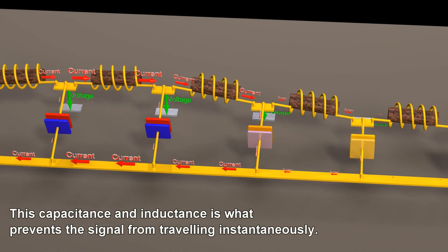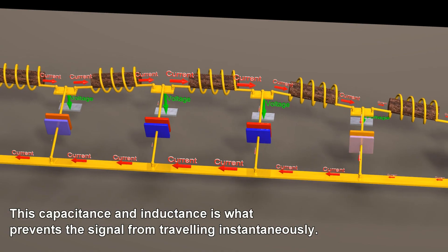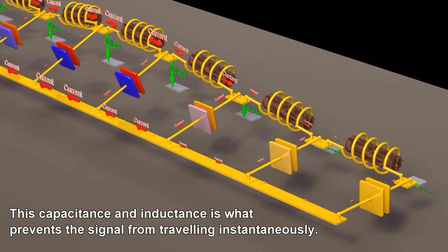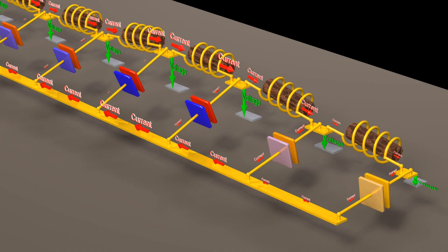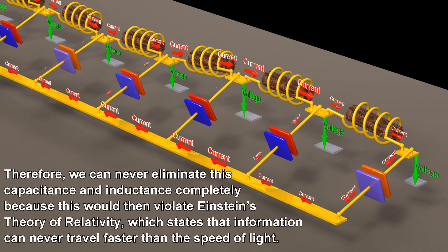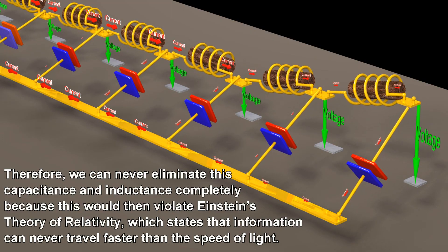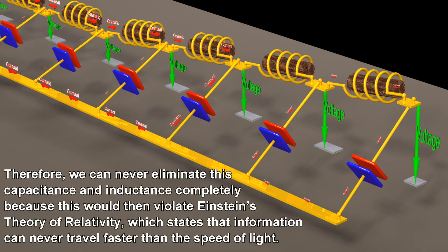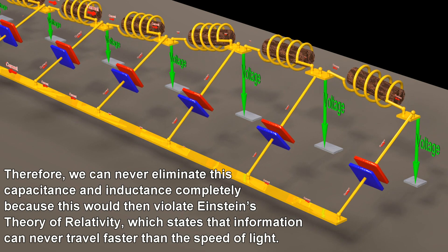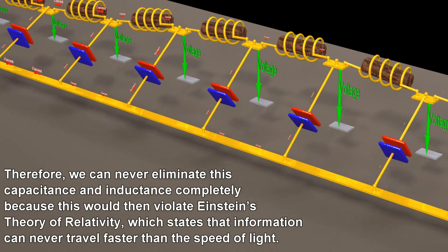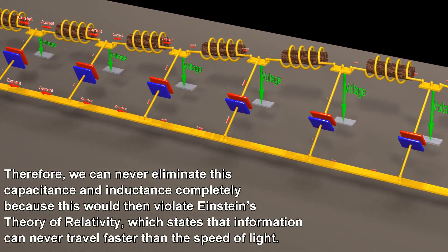This capacitance and inductance is what prevents the signal from traveling instantaneously. Therefore, we can never eliminate this capacitance and inductance completely, because this would then violate Einstein's theory of relativity, which states that information can never travel faster than the speed of light.